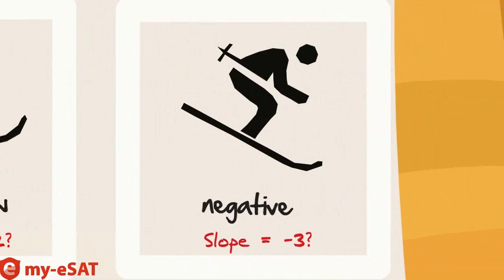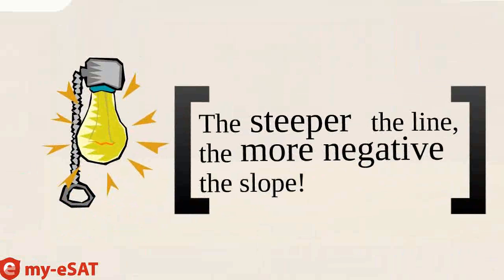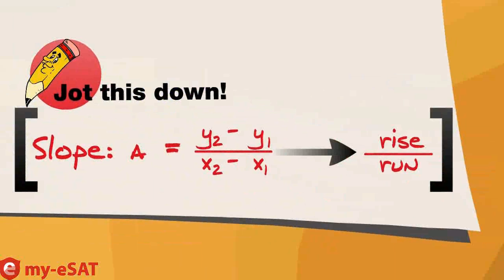This next line might have a slope of one half. And if it's going downwards, then we know it's a negative slope. Similarly, the more steeply it's going down, the lower the number is. So how do we find the exact slope of a line? You can do it if you know any two points on the line. You subtract the y-coordinates and put it on top, and then subtract the x-coordinates and put that on the bottom. One way to think about it is rise over run.